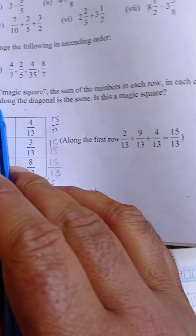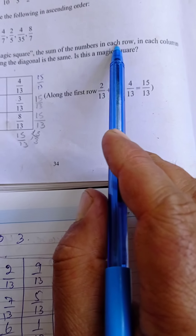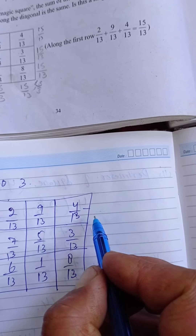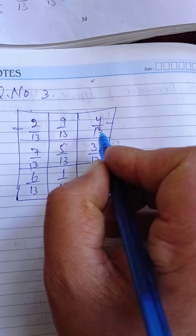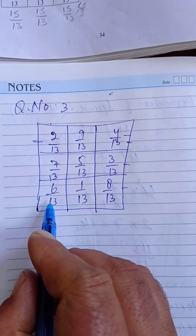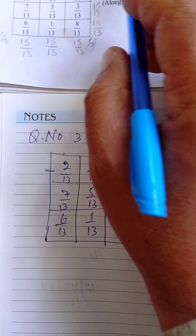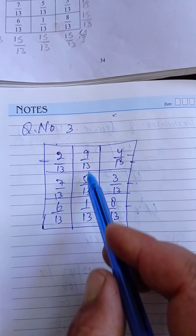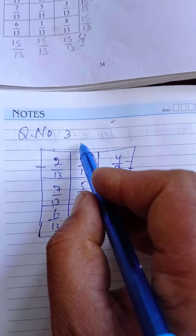Here is the magic square. We need to check the sum of the numbers in each row — the sum in each row should be the same.